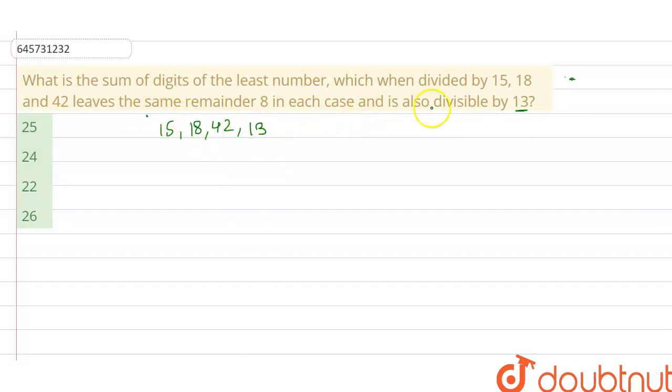Right, so in this case, what can we do? We have to take the least number, we have to find the least common multiple, the LCM. So what will we do? We will find the LCM of these four numbers.